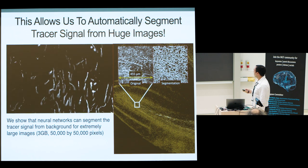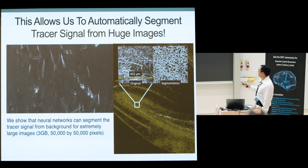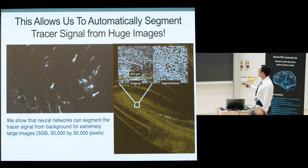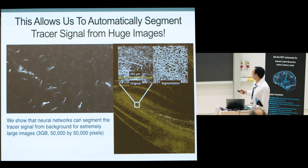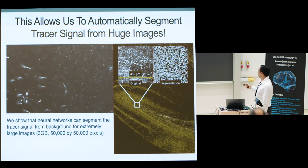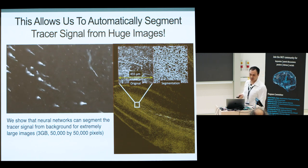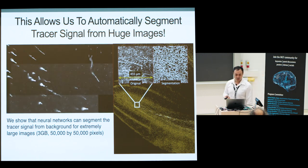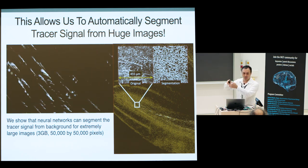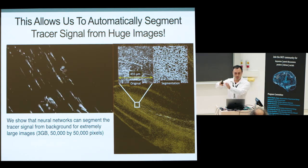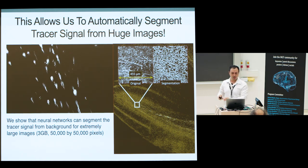This image is very large — a 3 gigabyte, 16-bit image at 50,000 by 50,000 pixels. To process it we had to divide it into smaller regions and then apply the neural network.